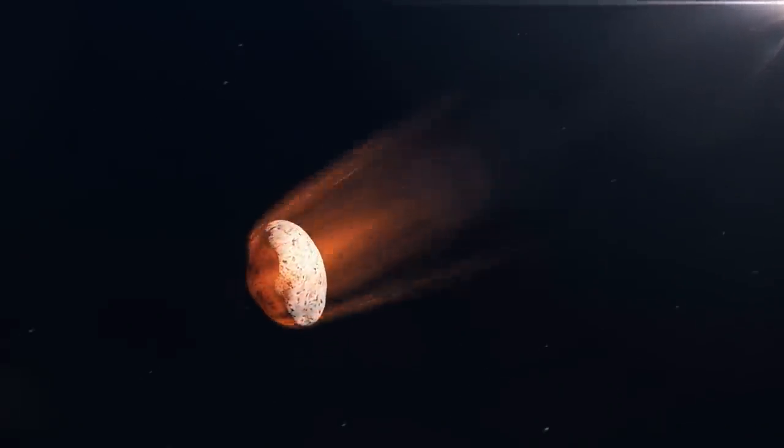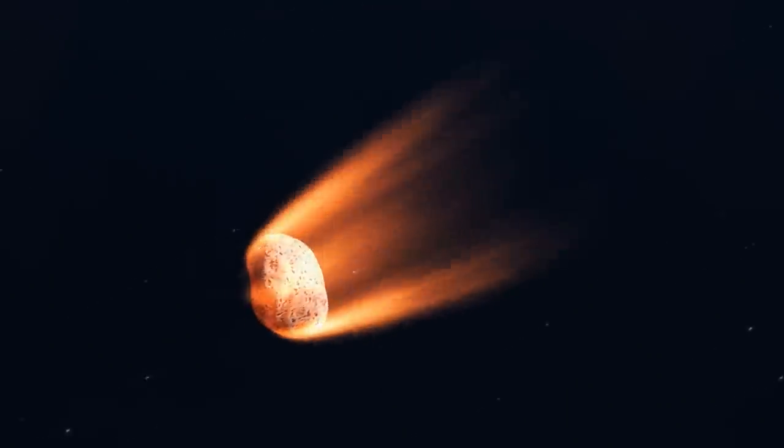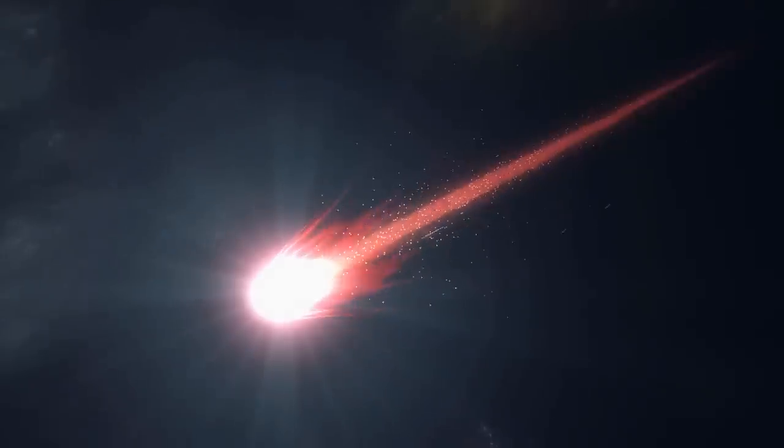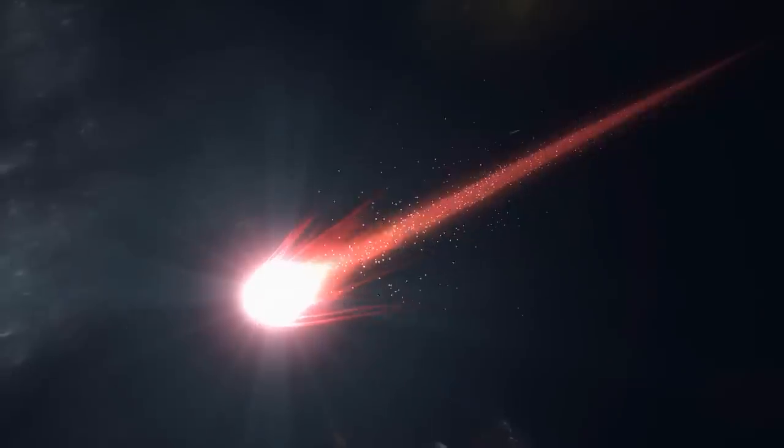These heavenly bodies from stone and ice cross the solar system on irregular courses. When they approach the sun, they heat up and emit dust and ice particles. This could explain why there is a dust sphere that has remained hidden until now.